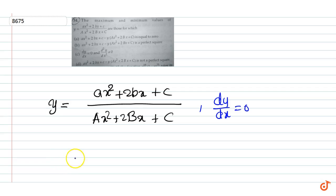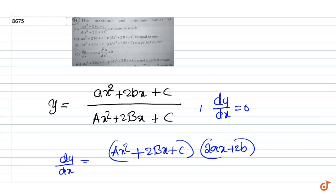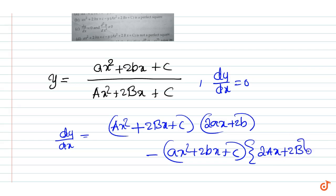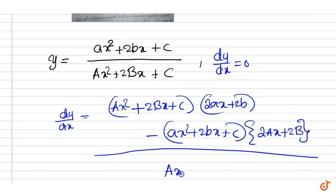We can write dy by dx equal to (ax square plus 2bx plus c) into differential coefficient of this function that is 2Ax plus 2B minus (ax square plus 2bx plus c) into 2Ax plus 2B upon (Ax square plus 2Bx plus C) whole square equal to 0.